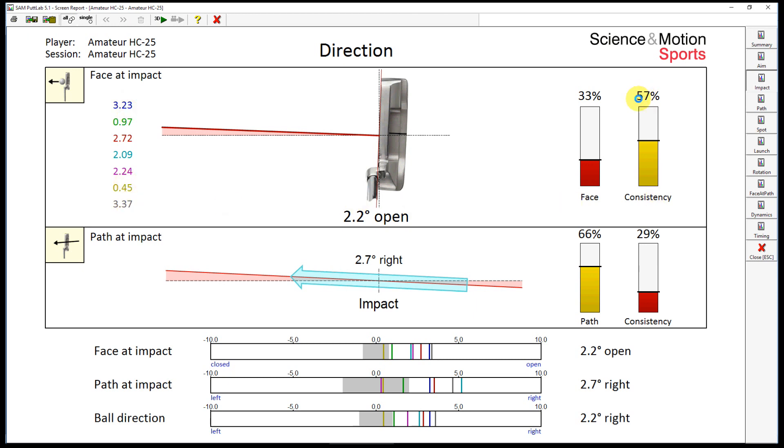Consistency is also low with only 57%. The second relevant aspect for direction is path angle at impact. This is 2.7 degrees to the right and you see consistency is also low with 29%. In the lower bar charts, you see the distribution of the single putts.